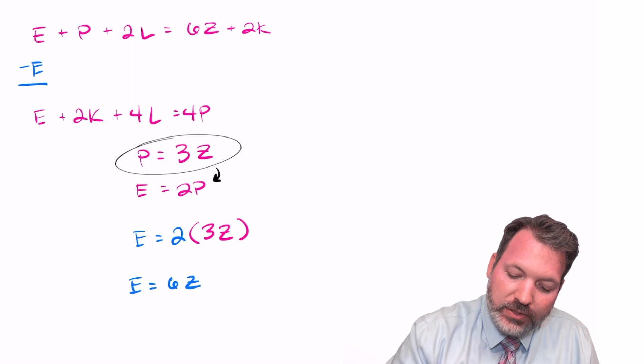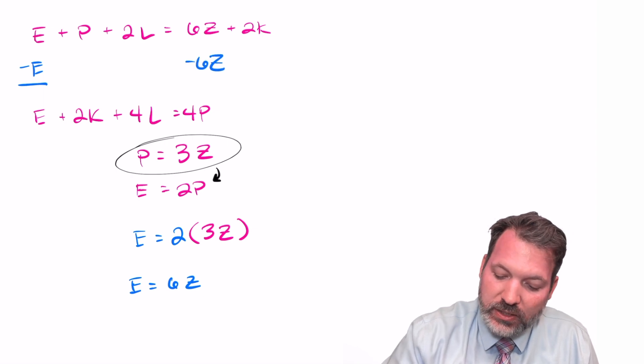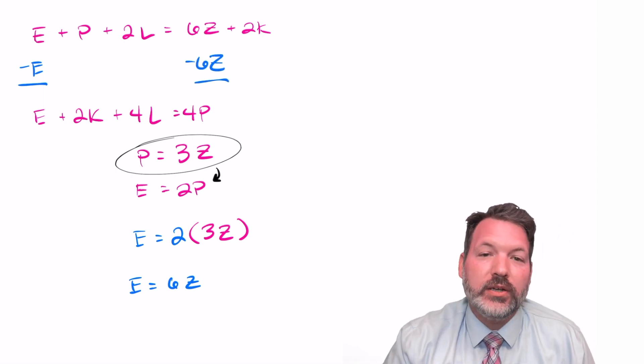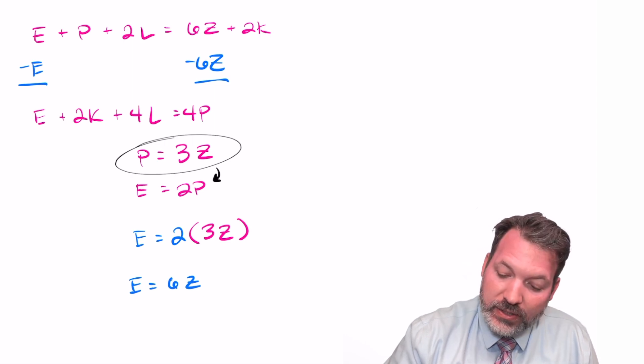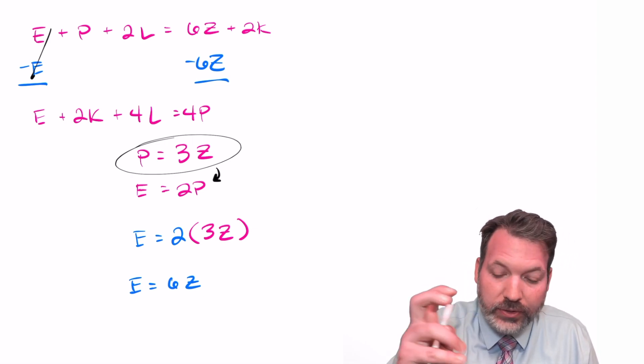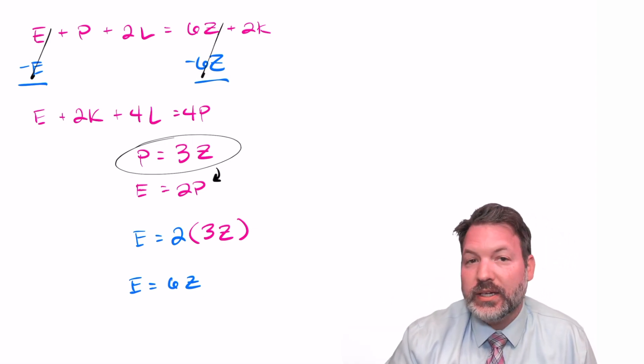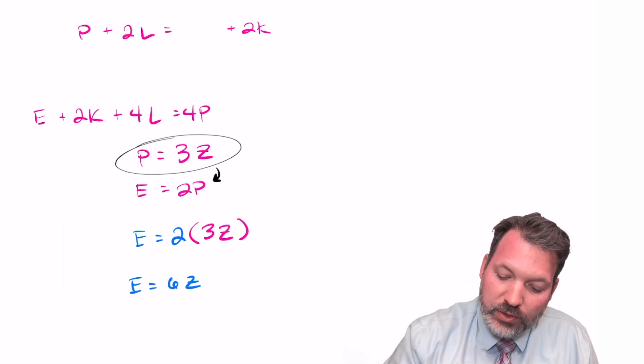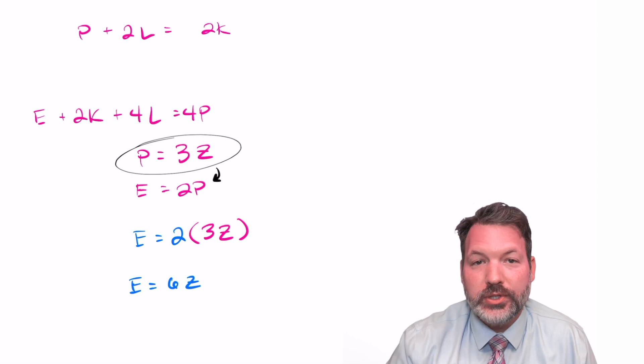Coming back up to that first equation, we can now use another algebraic tool called the subtraction property of equality. Basically, that allows us to take two equations and subtract those equations from each side of another equation. In this case, that's going to cancel out the E on the left and the six Z on the right. And it's going to leave us with a slightly simpler equation, P plus two L equals two K.